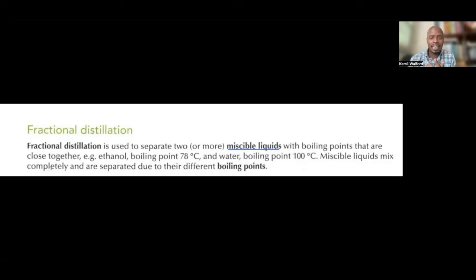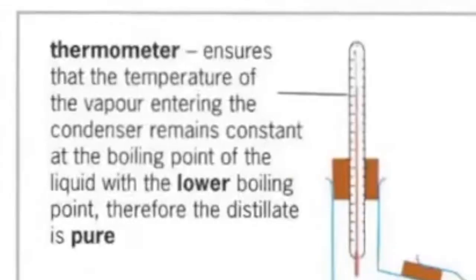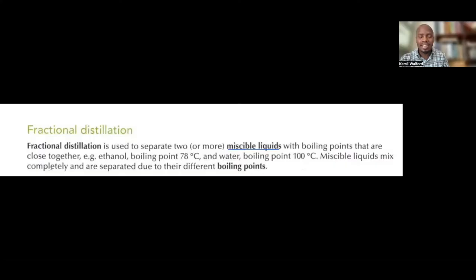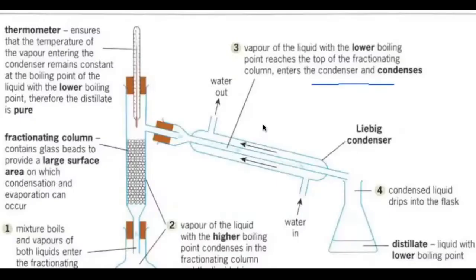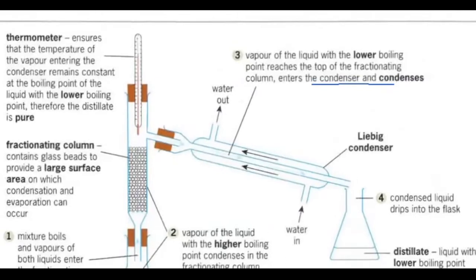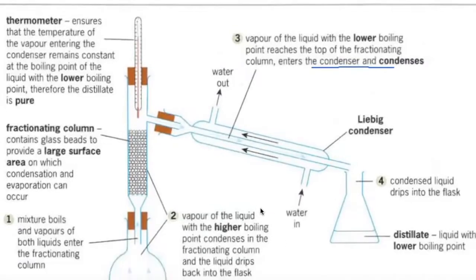But fractional distillation, miscible liquids, they mix, but it's not a matter of them just mixing. They mix well and their boiling points are close together. For example, ethanol and water, a boiling point of 78 and a boiling point of 100. So the miscible liquids mix completely, but they're separated due to their different boiling points. So which one do you think would be separated first? You'd reach 78. If we're going up in temperature, we're going to reach 78 before we reach 100. The temperature will hold at 78 until all the ethanol that is present in the mixture has boiled off.